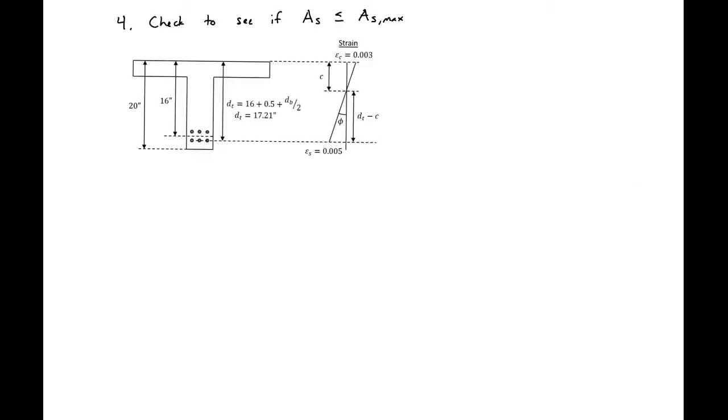The last check that we can do is we can check to see if the area of steel that we have in our section is less than the maximum area of steel that we can have if we still want to be tension controlled. We'll do this using our strain diagram and our section. ACI allows us to have tension controlled if we have a strain of 0.005 or greater in the bottom layer of our steel. So we need to find the distance from the top of our section to the center of that bottom layer of steel.